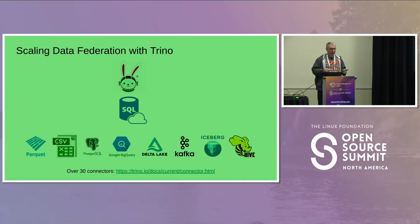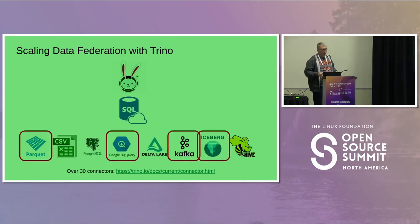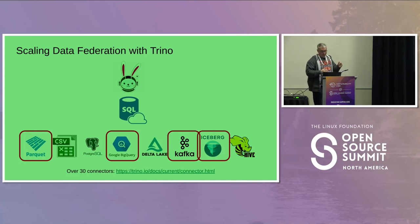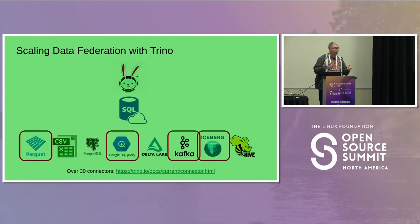Trino is also pretty good at data federation — there are dozens of connectors that allow you to connect your Trino install to different kinds of data sources, and they don't have to be co-located with you. Four we're doing a lot with: raw Parquet files exposed as an actual database to run SQL on; Google BigQuery federation; Kafka for streaming queries, similar to Spark structured streaming; and Iceberg files, using Iceberg's versioning and rollback capabilities.